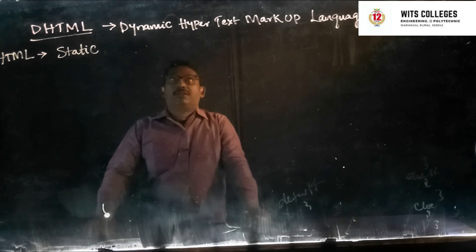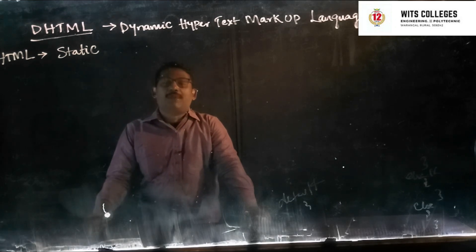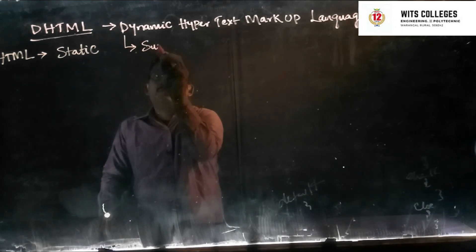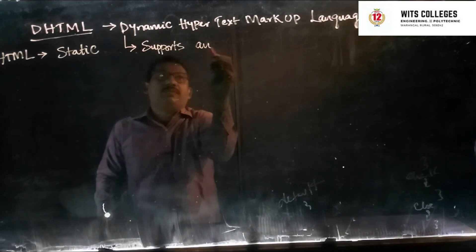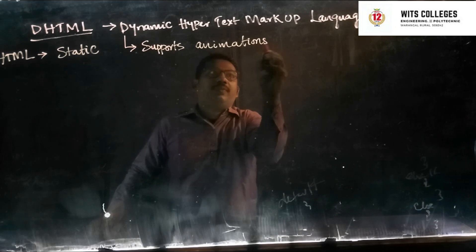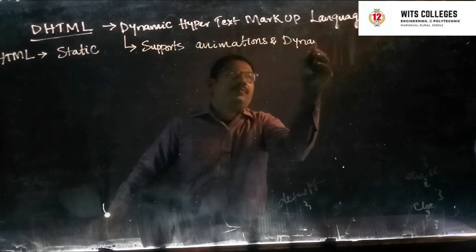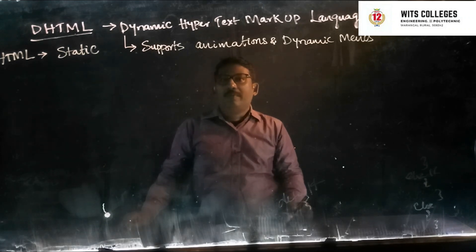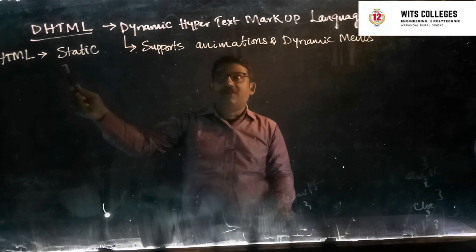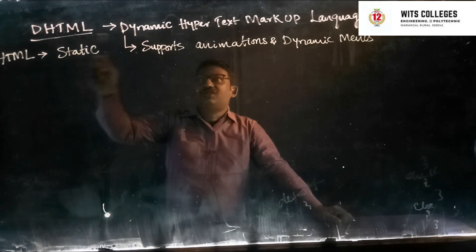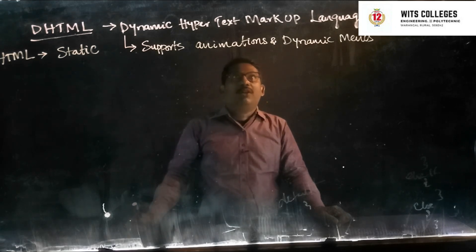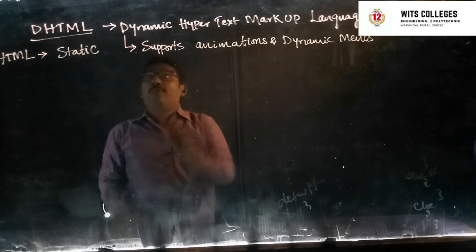DHTML is the hypertext language which supports animations and dynamic menus. HTML produces static web pages, whereas DHTML is Dynamic Hypertext Markup Language which supports animations and dynamic menus. It is a combination.